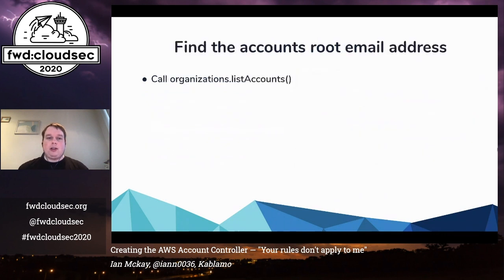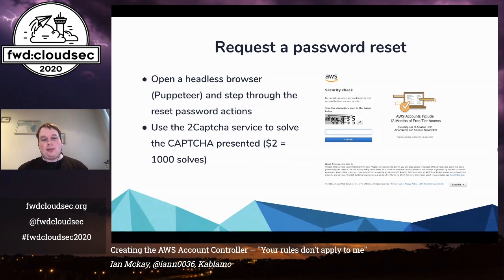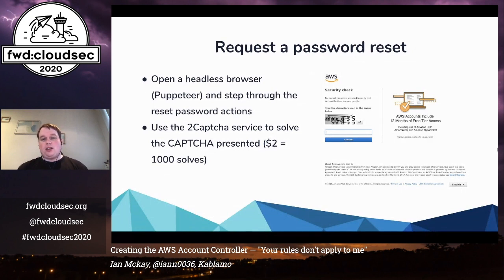So let's start to go through it. How do we programmatically find accounts through email address? It's pretty simple — we call organizations.listAccounts. Then it starts to get a little harder. We need to request a password reset, but there is no API for this. So this is where we start using Puppeteer, a headless browser framework, to step through the reset password actions. I use 2Capture to solve the CAPTCHAs that are presented, which is basically just outsourcing this work. It's two US dollars per a thousand solves, so it's fairly economical. I did try to use Rekognition.detectText to solve the CAPTCHA and got a success rate of something like one in twenty, which was interesting but not relevant for this.